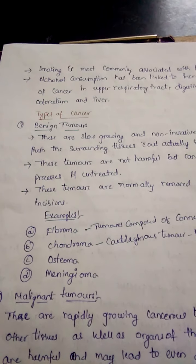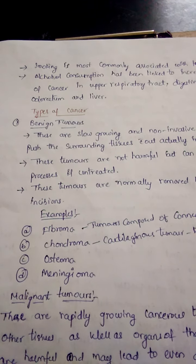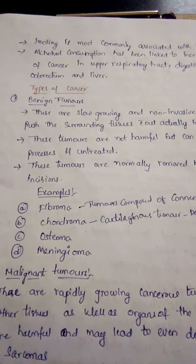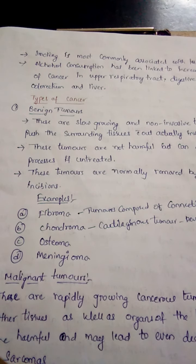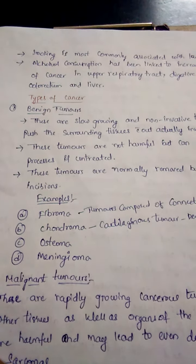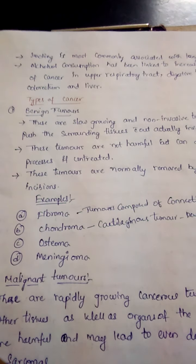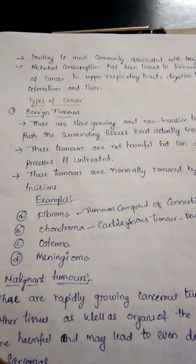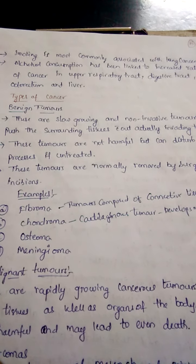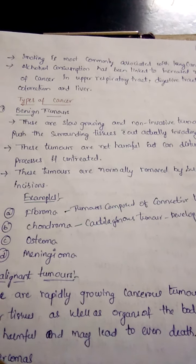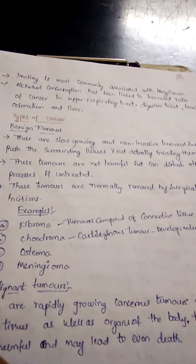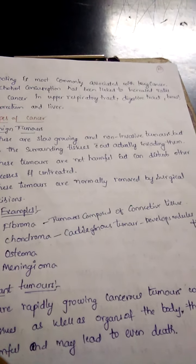Cancers are of different types. Mainly they are categorized into two types: benign tumor and malignant tumor. The major difference between them is the spreading of the disease. Benign tumors are slow-growing and non-invasive tumors.